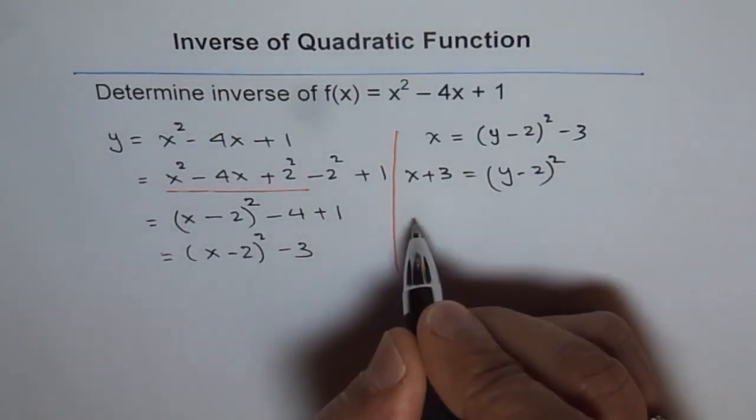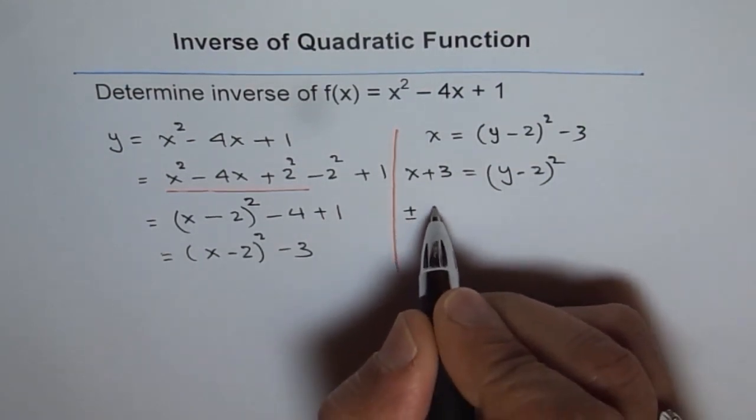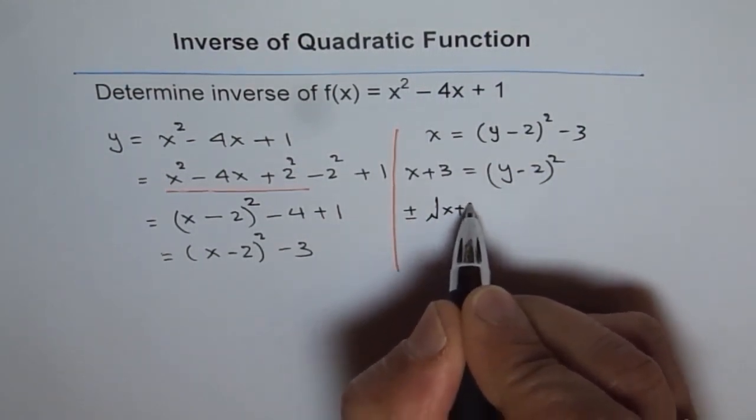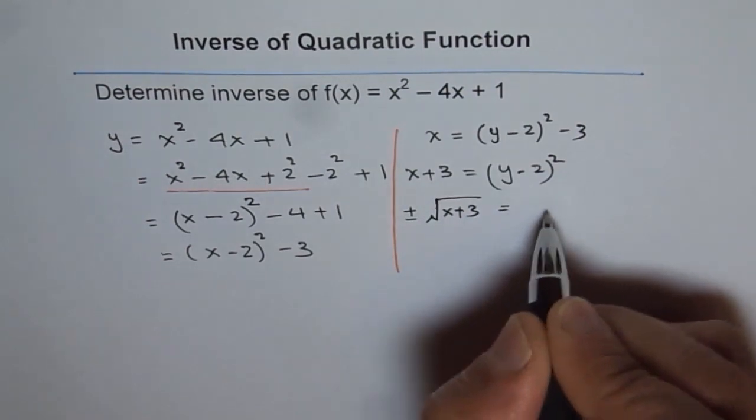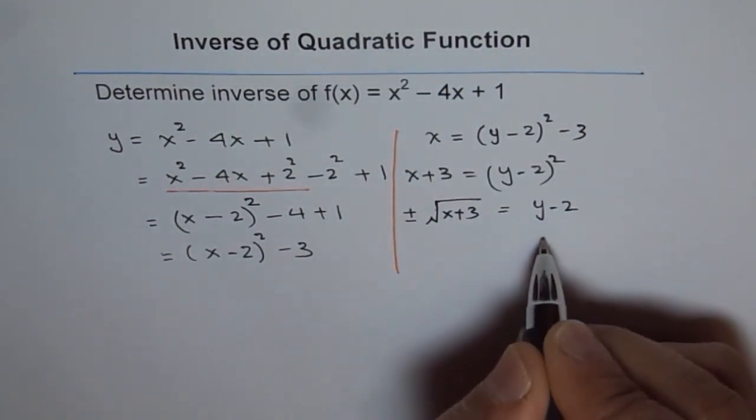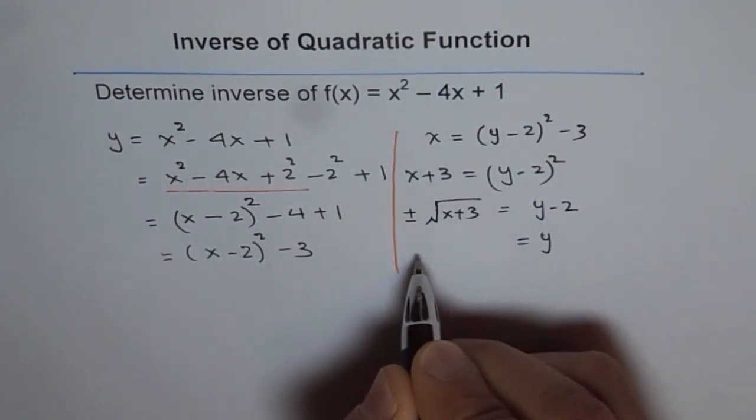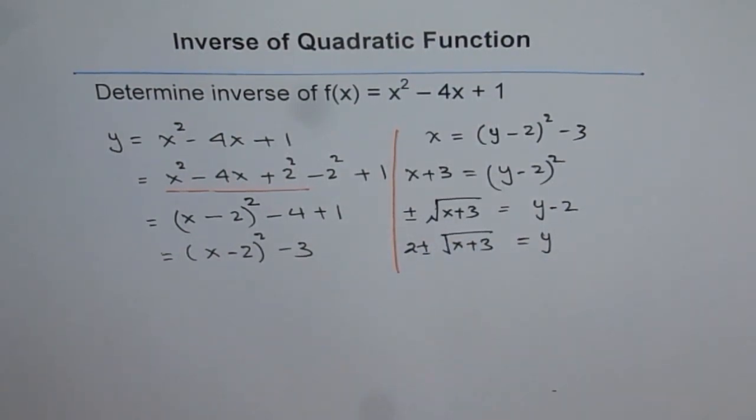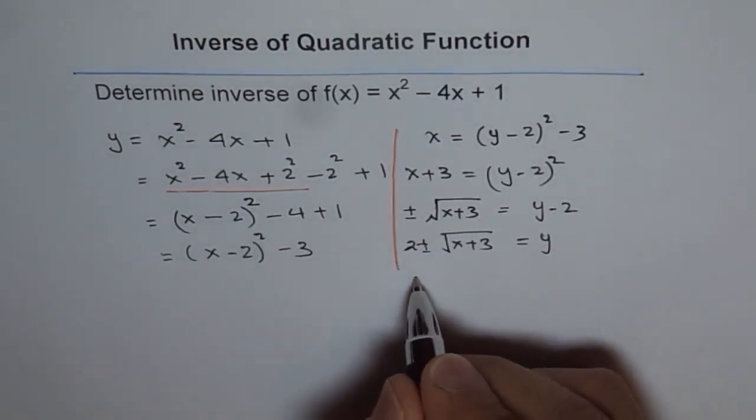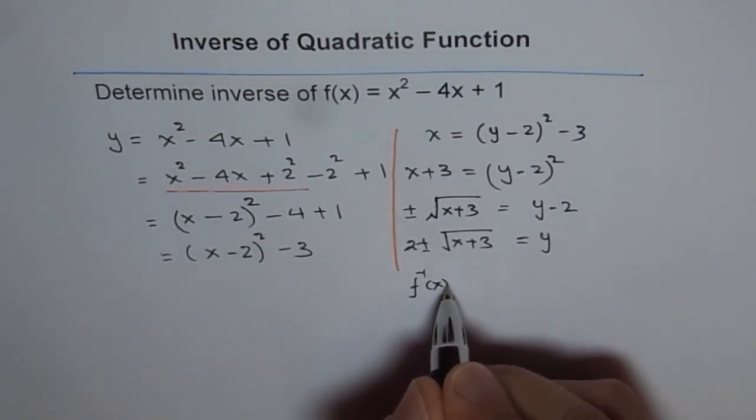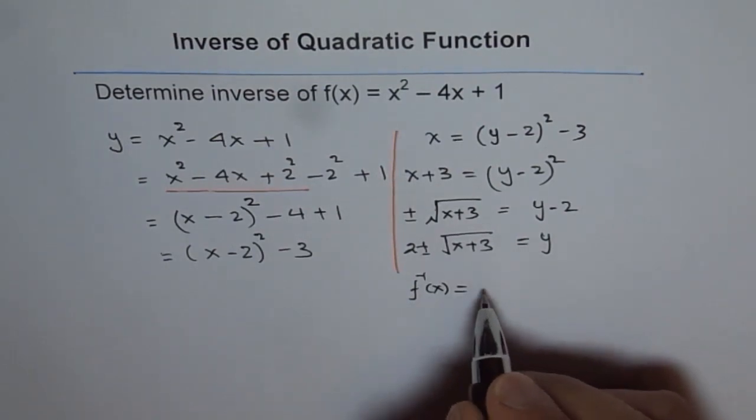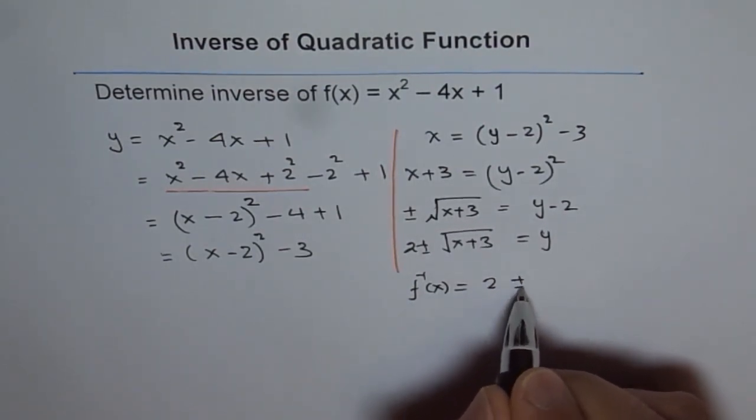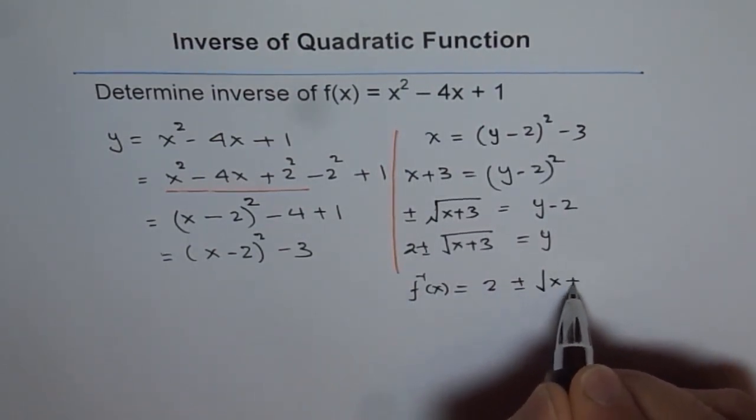And now we will square root it. And whenever you square root, you have to do plus and minus. We get √(x + 3) = y - 2. And now y is equal to 2 ± √(x + 3). So that becomes the inverse function. And this can be written as f⁻¹(x) = 2 ± √(x + 3).